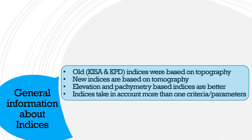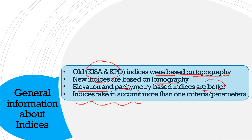Some general information about the indices: older indices like Keysight and KPD index were based on topography and not as reliable as the new indices which are based on tomography. Remember that the elevation and pachymetry based indices are better as compared to the sagittal map based indices. Indices take into account more than one criteria parameter and generally they are very, very reliable.